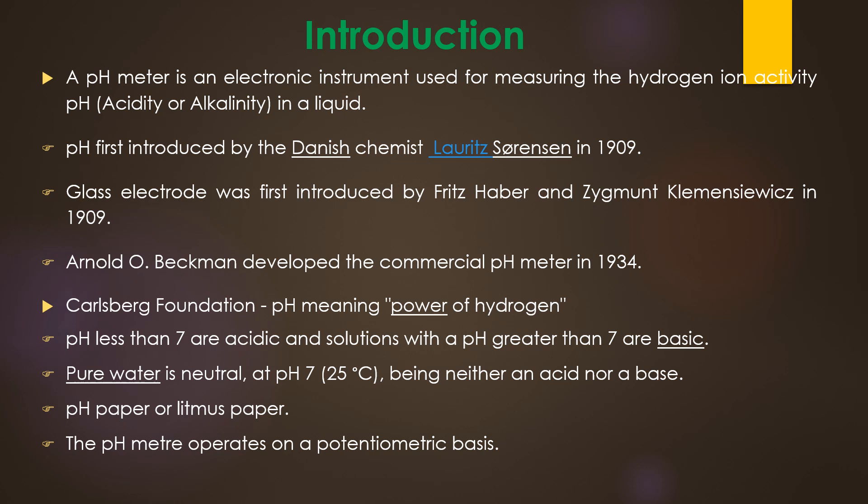According to the Carlsberg Foundation, pH stands for power of hydrogen. Solutions with pH less than 7 are acidic, and solutions with pH greater than 7 are basic or alkaline. Pure water's pH is neutral at pH 7, being neither an acid nor a base. It is essential to verify the pH of any given solution while doing numerous tests. pH is typically determined using pH paper or litmus paper, and the change in color of litmus paper indicates a change in pH. This method is known as the visual method.